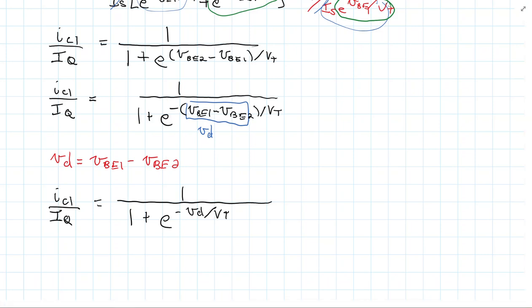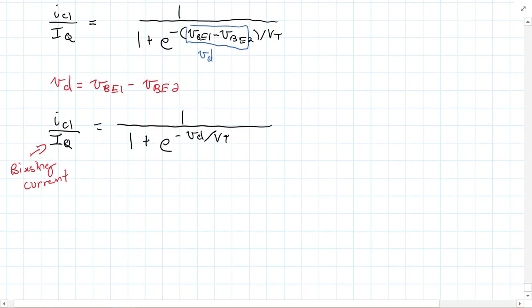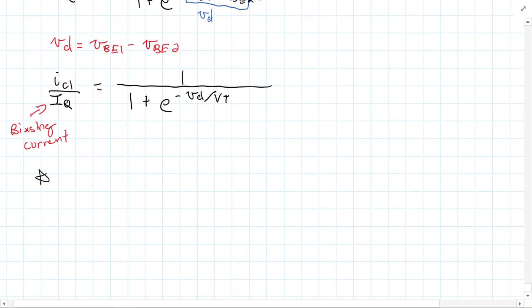So I have IC1 over IQ is equal to 1 over 1 plus E to the negative VD divided by VT. Now this Q here, this IQ, this is just my biasing current. So that's just my biasing current. And this would be that IC1 is going to be equal to IQ over 1 plus E to the minus VD over VT.